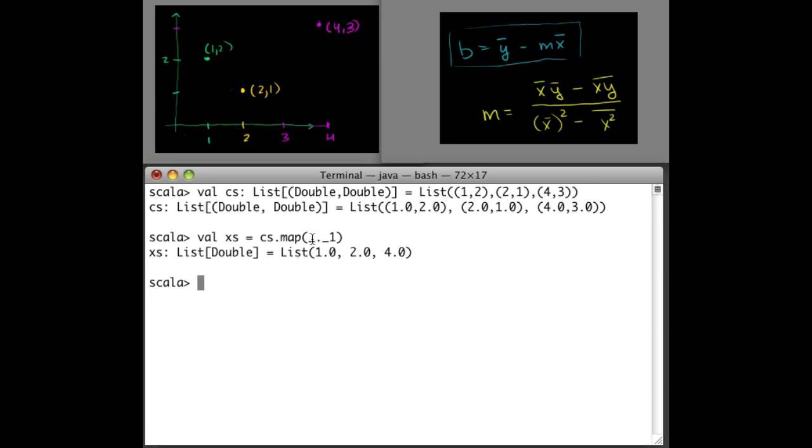The first underscore here refers to the coordinate pair that's currently being mapped over, and this underscore is used to indicate which of the two tuple elements I'm interested in. Let's do the same thing for ys with the second value. Now we have the ys: 2, 1, and 3.